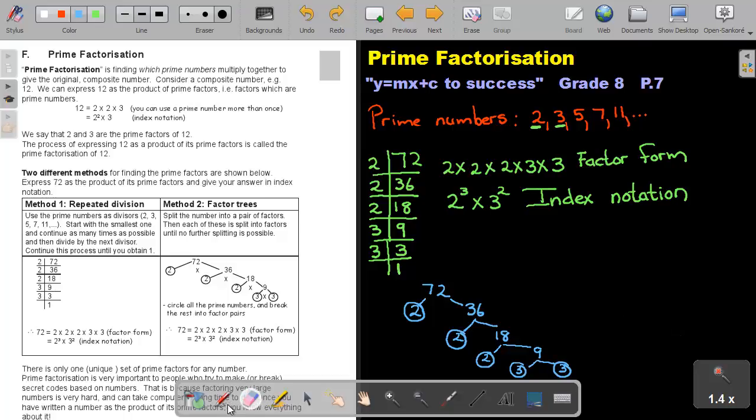So basically, if we rewrite it, we can say it's 2 times 2 times 2 times 3 times 3. And we call this again factor form. And if we write it in index notation, we will count how many 2's: 1, 2, 3, so 2 to the power of 3. Count how many 3's: 1, 2. And we call this index notation.